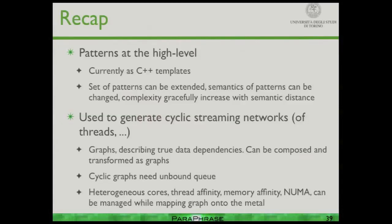In summary, we work on patterns — very much in the perspective of the PARAPHRASE project — and use a bit of generative programming to generate cyclic stream networks. As someone from Mellanox noted this morning, stream networks always have a possibility of deadlock inside. That's why we developed an unbounded queue: with an unbounded queue the possibility of deadlock is much more limited because you can always expand the buffering space.